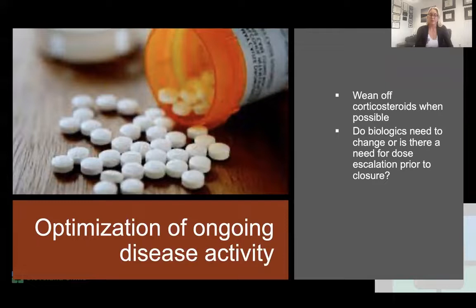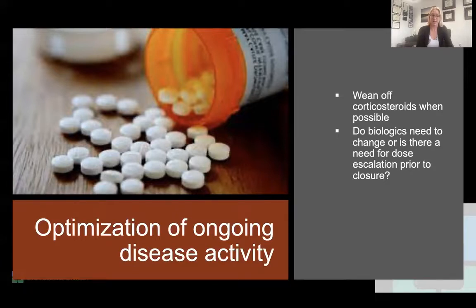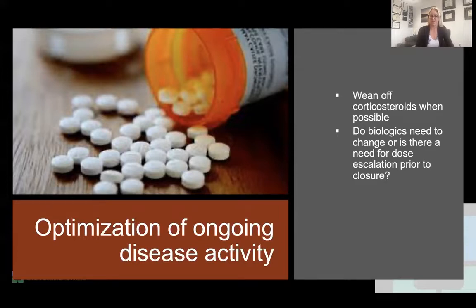The last consideration is optimization of ongoing disease activity. If patients are on steroids, we want to try to wean them off prior to stoma reversal. If a patient has ongoing disease activity — meaning luminal involvement, ulceration, proximal involvement, or proctitis — you want to understand whether they are medically optimized. This may mean checking biologic drug levels and antibody levels. If we're going to change the medical regimen, it's better to do that prior to reversing the stoma so they can be on stable medical therapy going into and after the surgery. Working with the gastroenterologist to understand optimal medical management is very important.